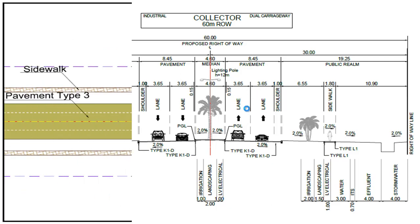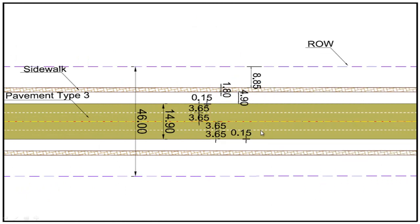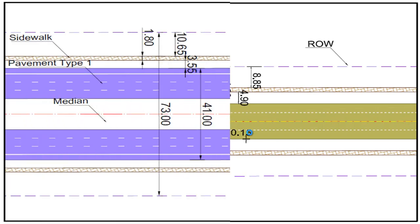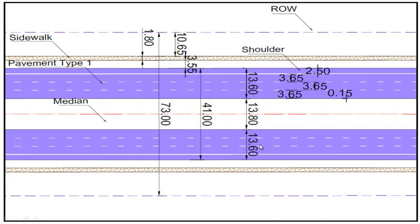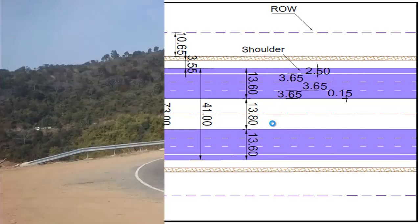I also want to mention other things. The width of our offset: 3.6, 3.6, 3.6. This is a double road, 13.6 meters. If you divide this, same standard size plus plus, then after that 2.5 for emergency parking. This is the basic knowledge about offset you must know before starting this lecture.